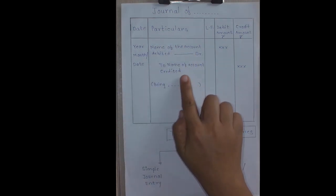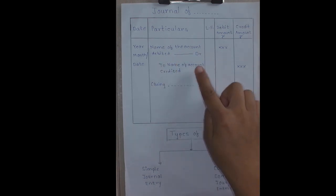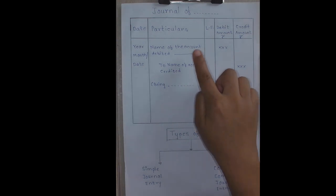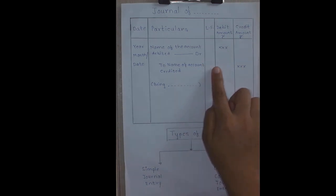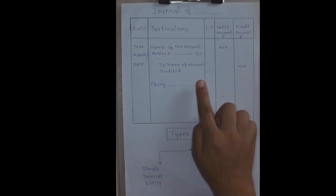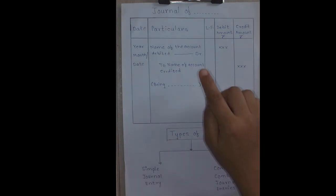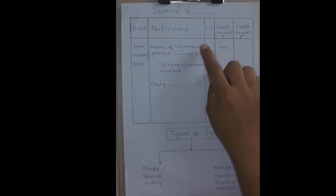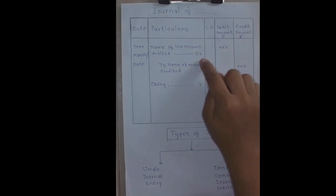The second column of journal is particulars. There are two aspects in that particulars — first is debit, second is credit. The debit account records the name of the account to be debited. This is decided by applying the rules of debit and credit. The account to be debited is always written first, and the word 'debit' is written in front of the debited account, just near the ledger folio.